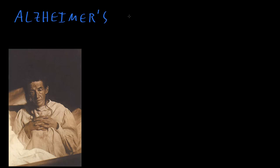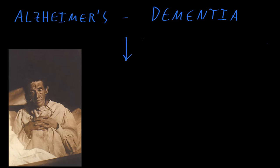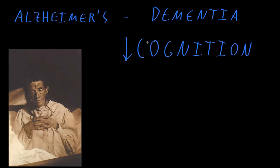Alzheimer's disease is the most common disorder in the category of disorders called the dementias, or with newer terminology called the neurocognitive disorders. What these disorders involve is a loss of cognitive functions — cognition being the thinking functions of the brain. Alzheimer's disease in particular usually starts with a decreased ability to form new memories, so the main early complaint is memory troubles.